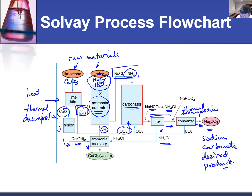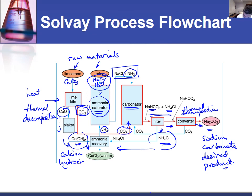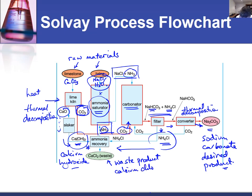Looking at the other substance from the process — the ammonium chloride — it's going to combine with the calcium hydroxide which was originally sourced from the limestone. That gives us two products: one is ammonia, which feeds back into the system and continues to recycle, and the other is our waste product — calcium chloride.